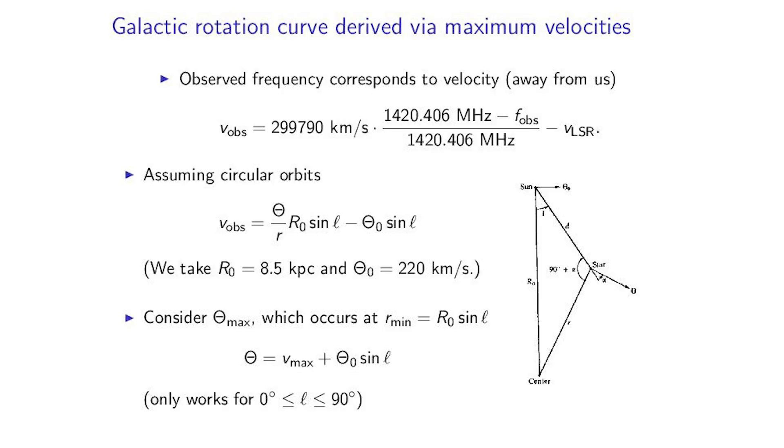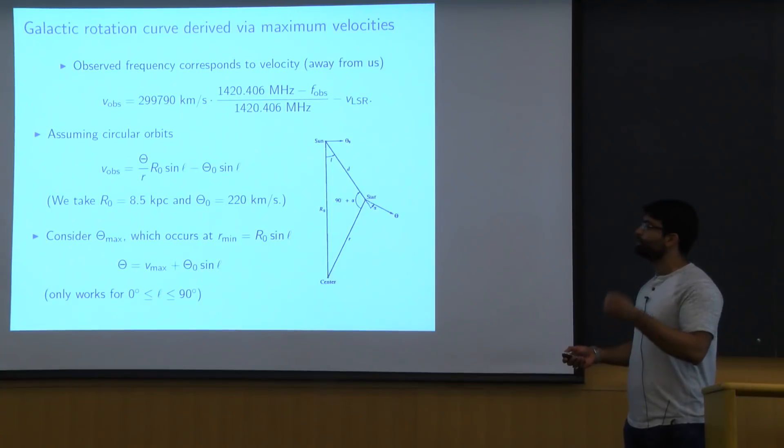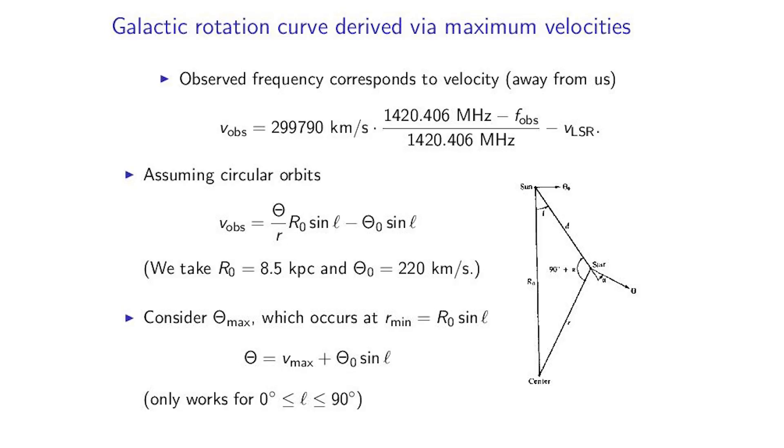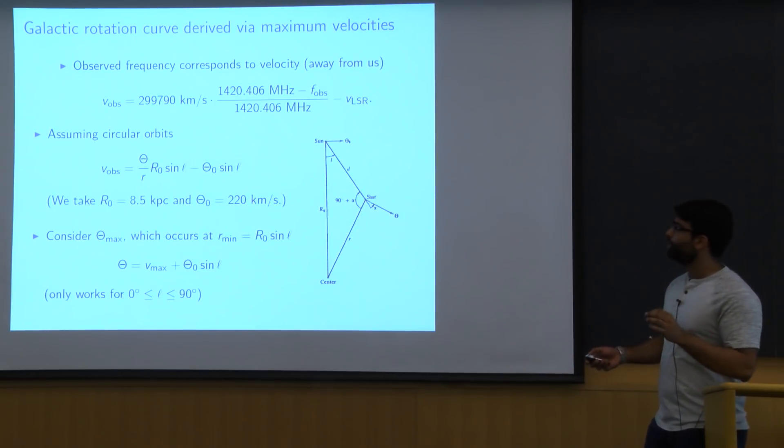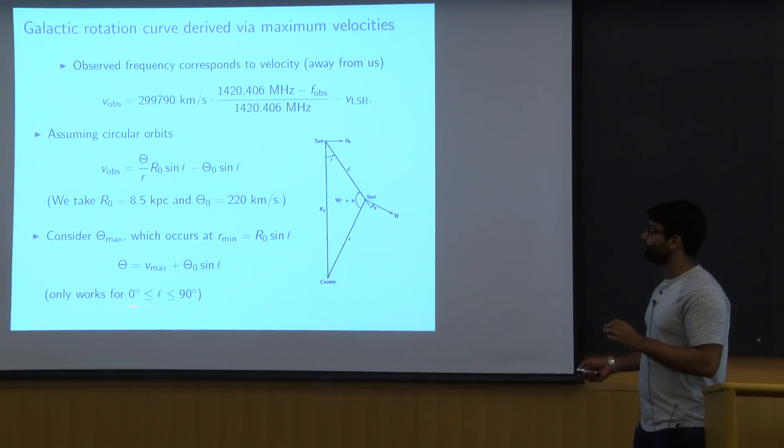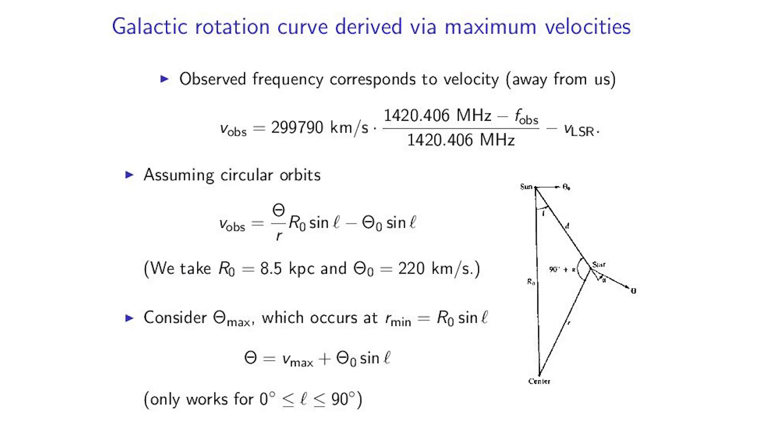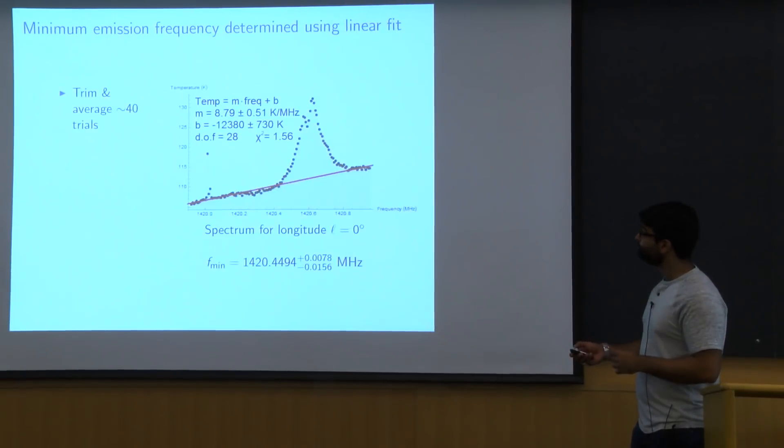And so this formula is all well and good if we actually know what radius the star is at. But a priori, we don't know that. So the trick we're going to be using here is actually just to consider the maximum velocity that we see. And the maximum velocity will occur at the minimum radius. And that's simply given by this R_0 sin L. And so if we specifically consider that minimum radius, then this formula allows us to relate that maximum velocity to the velocity of the star in question. Note, however, that this only works for longitudes less than 90. That's in the first quadrant I was talking about before. And that's simply because if you're looking at stars which are further away from the center of the galaxy, then they're all just going to get further and further away. There's not going to be any minimum radius.